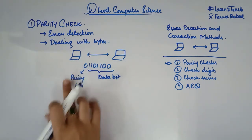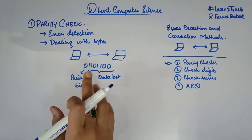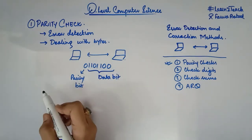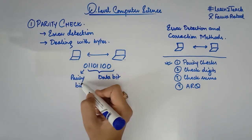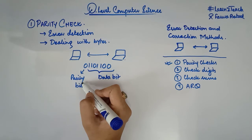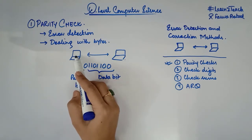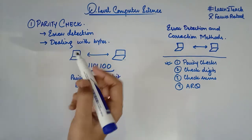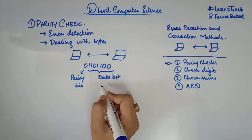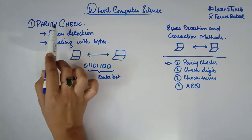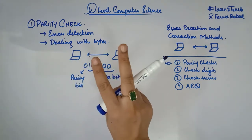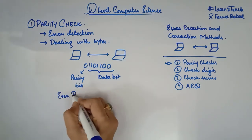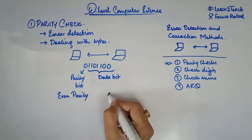The parity bit is set at the sender's end before transmission. In parity checks, you have two kinds of parities: either even parity or odd parity.